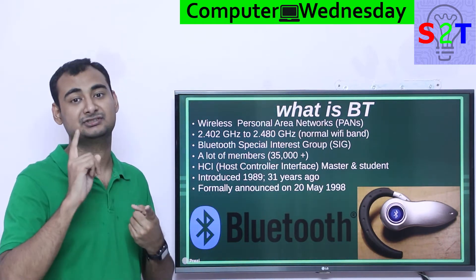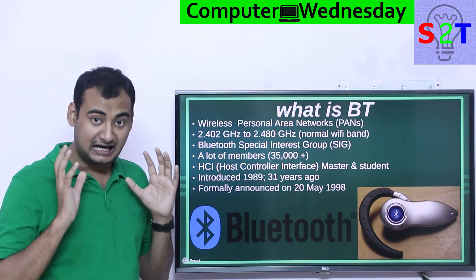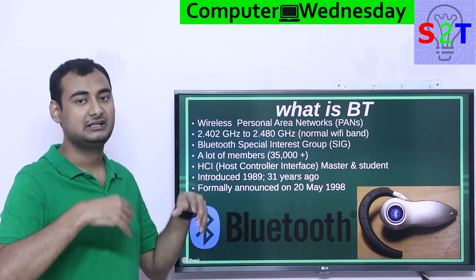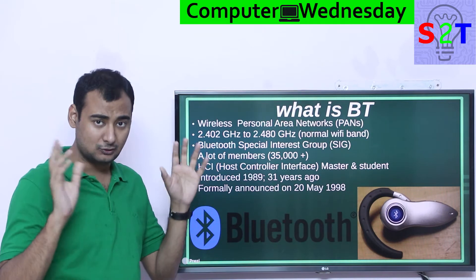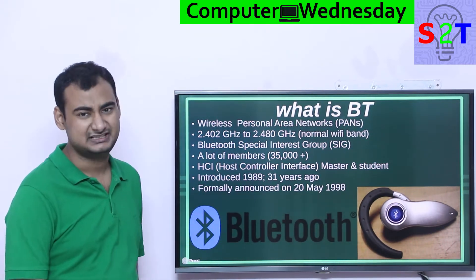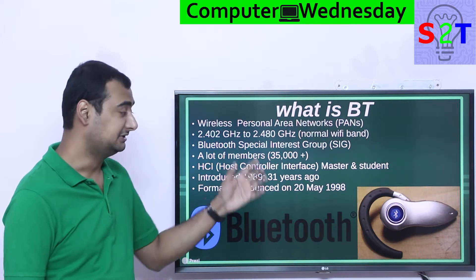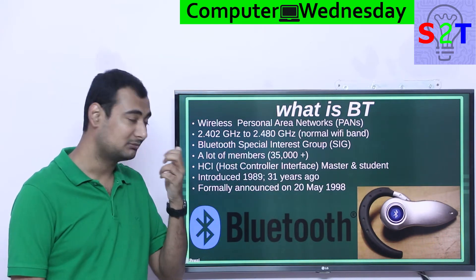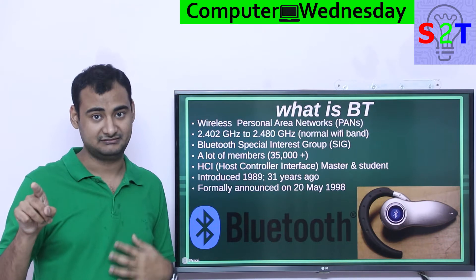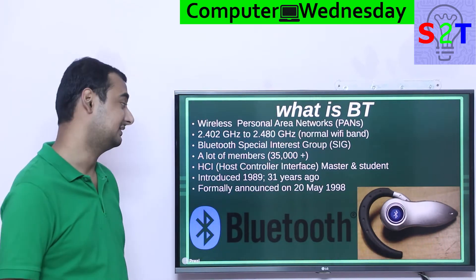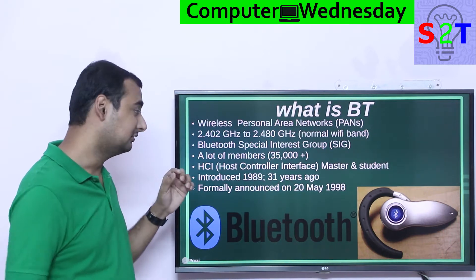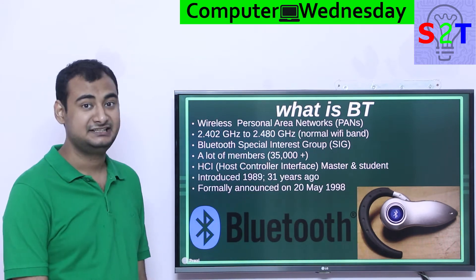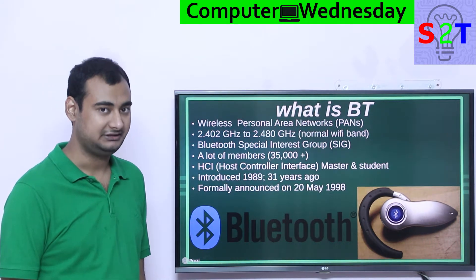The architecture of Bluetooth is basically a host controller interface — there is a master and a slave. Your mobile phone is the master and your headset is the slave. This whole concept was introduced in 1989, making it 31 years old. In the early days the whole concept was just a headset for voice — it was not good enough for music. The formal public announcement was made on May 20, 1998.